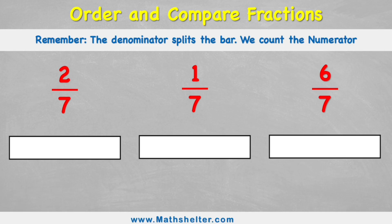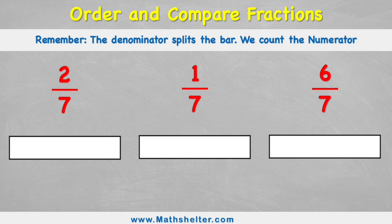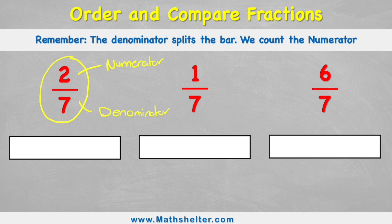The thing we need to remember today is that the denominator splits our bar or splits our whole, and then we're going to count the numerator. But that might not mean much at the moment, so let's first understand what numerators and denominators are. So if we're looking at this first fraction, two sevenths, the number on the top is what we call our numerator. And the number on the bottom is our denominator. What it essentially means is that the number on the bottom is how many we're going to split our whole into.